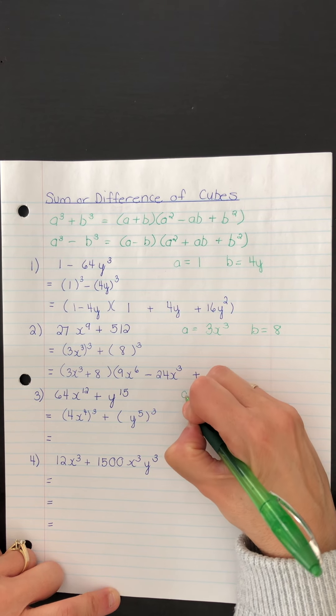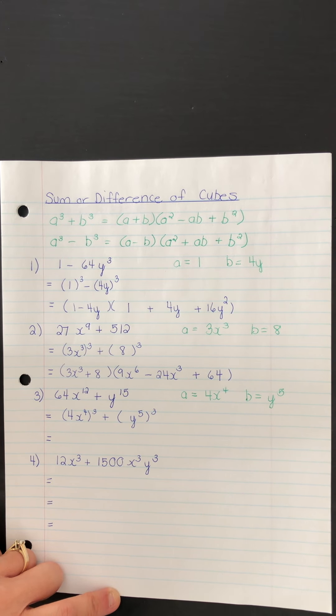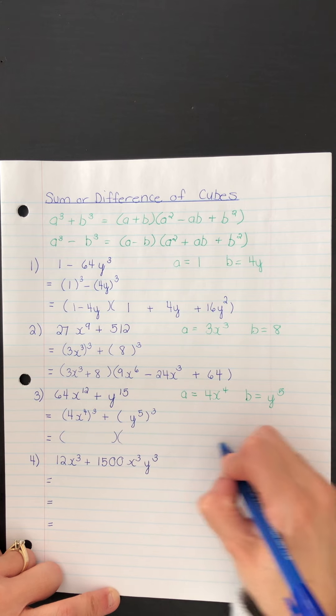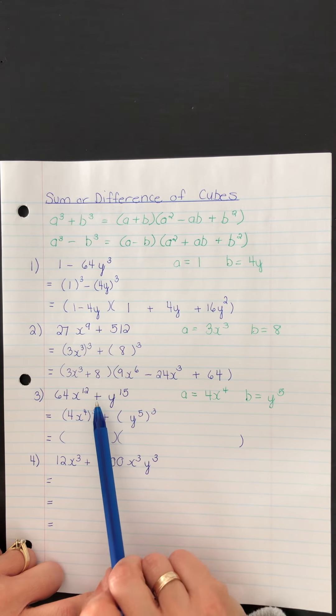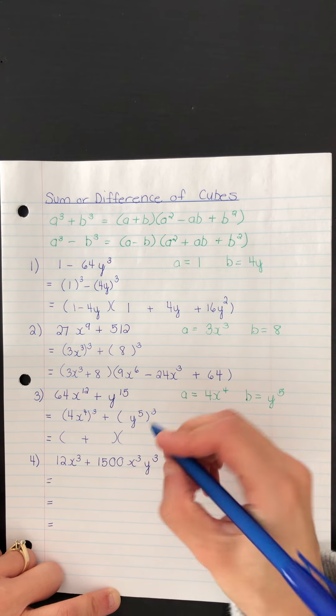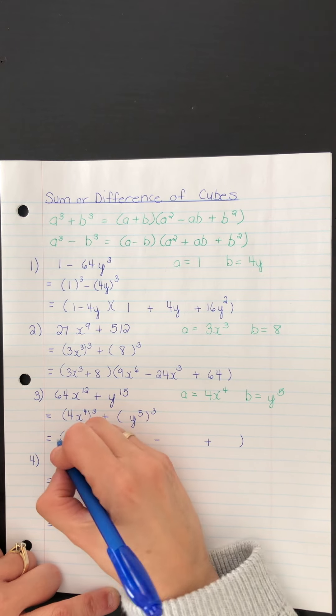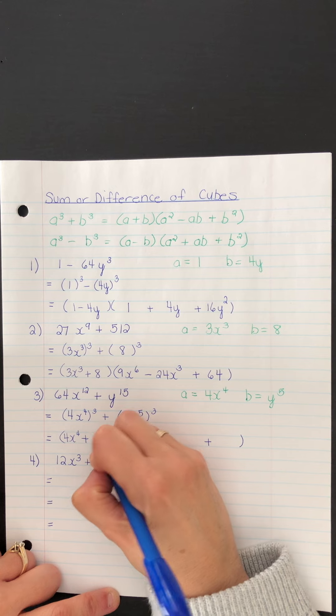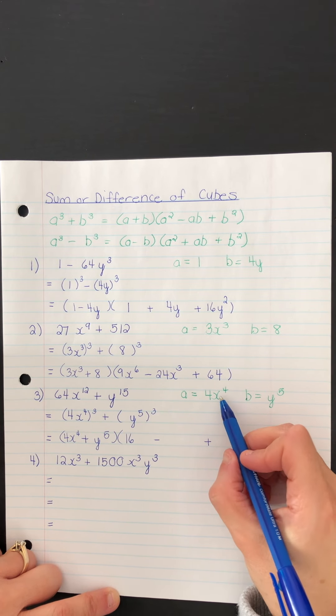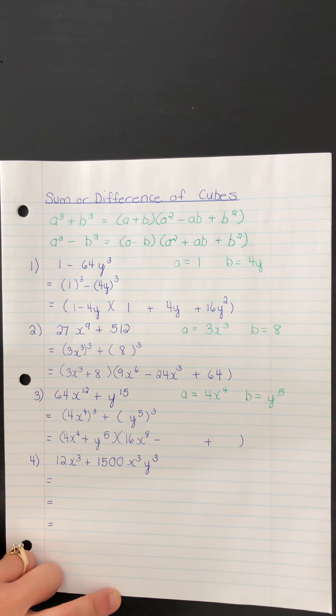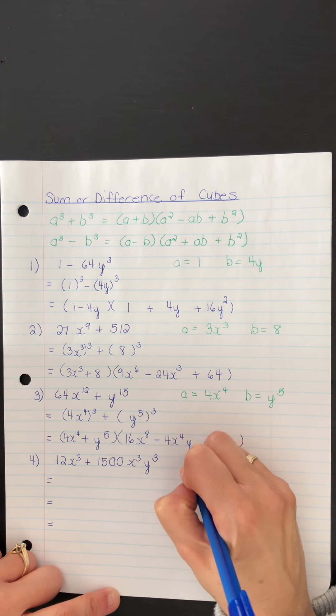And so now we have A is the inside of the first bracket. B is the inside of the second bracket. And then we're going to have binomial, trinomial. We follow the formula with the plus sign, right? Sum of cubes. So this will be plus, this will be minus, and this will be plus. In this one, we need A here and B here. Right here, we need A squared. So square the 4 and get 16. Square x to the 4 to get x to the 8. This is supposed to be A times B. So we multiply here and just get 4x to the 4y to the 5.